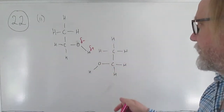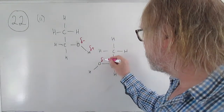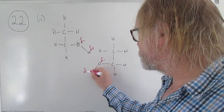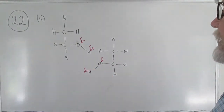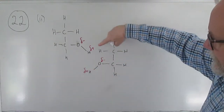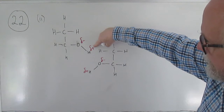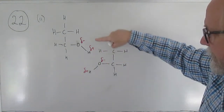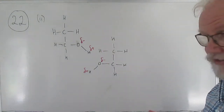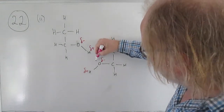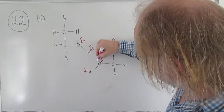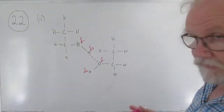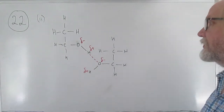And then the same on the second molecule: delta negative on the oxygen, delta positive on the hydrogen. The point is it's an attractive force between the delta positive on one molecule and the delta negative on another. In essence, it is just electrostatic attraction, and you mark it on as a dashed or dotted line — not a full line, because it's not a covalent bond.